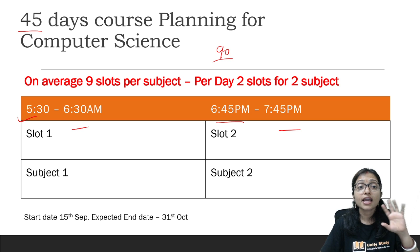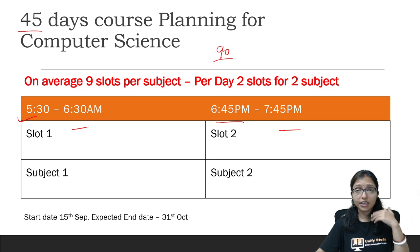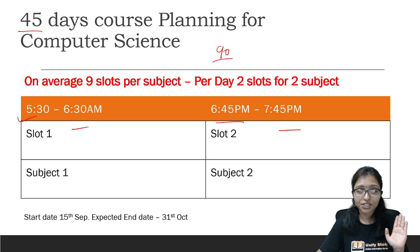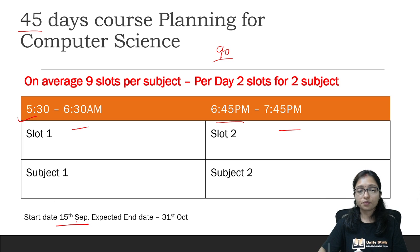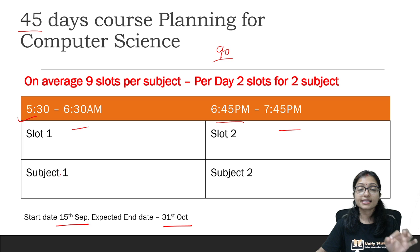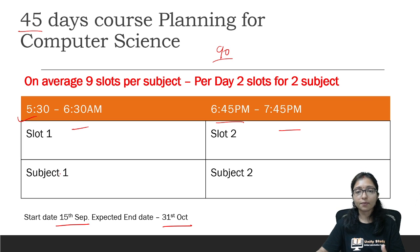Parallelly you can do two subjects, and within 45 days you can cover all these subjects. Our start date is 15th September and the end date is 31st October. This is our expected planning.